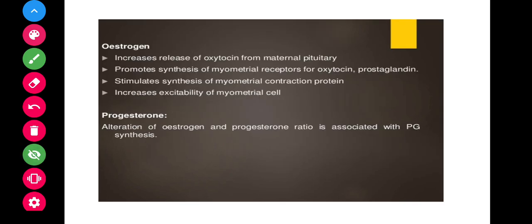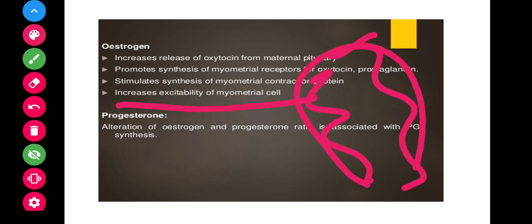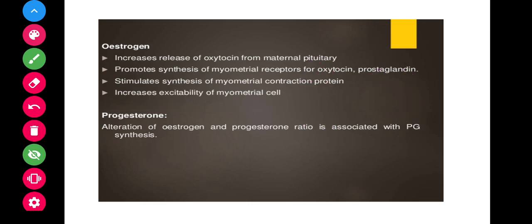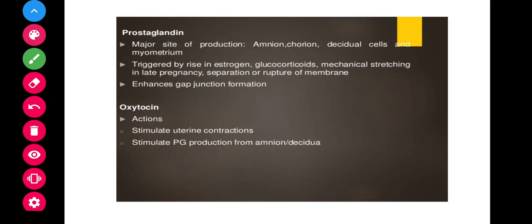When estrogen levels increase, it initiates the release of oxytocin from the maternal pituitary, promotes the synthesis of myometrial receptors, and stimulates synthesis of myometrial contraction proteins, increasing the excitability of myometrial cells to encourage the fetus to come out through uterine contractions. Progesterone also plays an important role. The alteration of the estrogen-to-progesterone ratio is associated with prostaglandin synthesis, the major sites of production being the amnion, chorion, decidual cells, and myometrium.